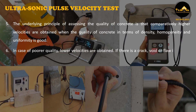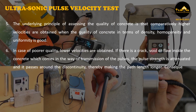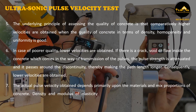If there is a crack, void, or flaw inside the concrete which comes in the way of transmission of the pulses, the pulse strength is attenuated and it passes around a discontinuity, thereby making the path length longer. Consequently, lower velocities are obtained. The actual pulse velocity obtained depends primarily upon the materials and mixed proportions of concrete. Density and modulus of elasticity of aggregate also significantly affect the pulse velocity.